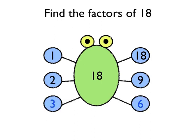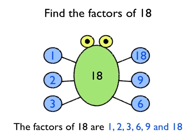...or 3 times 6. There aren't any more than that, so the factors of 18 are now just the feet of our factor bug, which are 1, 2, 3, 6, 9 and 18.